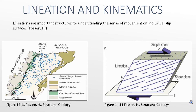Lineation was found to be parallel to the regional transport direction. Geologists later came up with the theory that lineation in most cases is parallel to the A axis and not the B or C axis, as we can see on the right side of the picture where the lineations rotate toward the A axis.